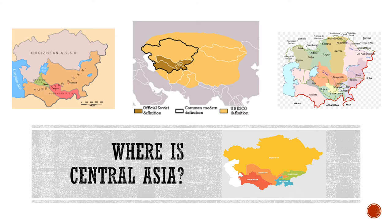As shown by the middle image on this PowerPoint slide, UNESCO actually includes a much wider area. This includes not only Afghanistan but parts of Pakistan, Iran, India, much of Western China, and Mongolia.